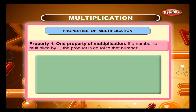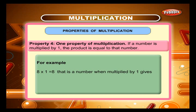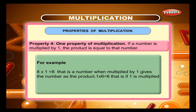Property 4: One property of multiplication. If a number is multiplied by 1, the product is equal to that number. For example, 8 into 1 is equal to 8. A number when multiplied by 1 gives the number as the product. 1 into 6 is equal to 6. If 1 is multiplied by any other number, it also gives that number as the product.